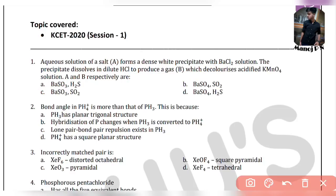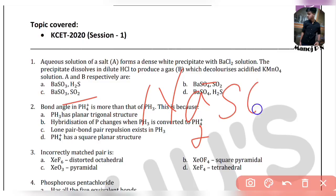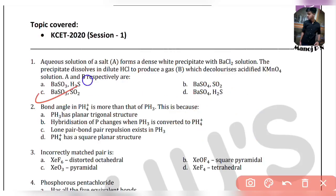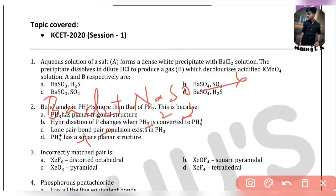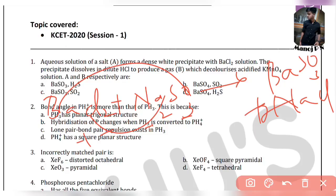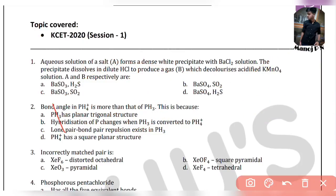The salt is Na2SO3. The reaction: Na2SO3 + BaCl2 gives BaSO3 as a white precipitate plus 2NaCl. BaSO3 is our white precipitate. Then BaSO3 dissolves in HCl: BaSO3 + 2HCl gives BaCl2 plus SO2 gas. SO2 decolorizes acidified KMnO4. So A is Na2SO3 and B is SO2.